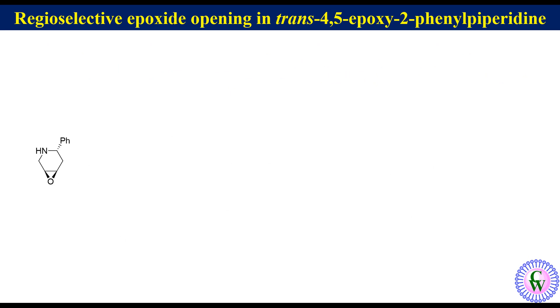In this epoxide there are two different electrophilic carbons, so there is the possibility for the formation of two regioisomers. But in the reaction only one is formed.